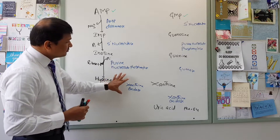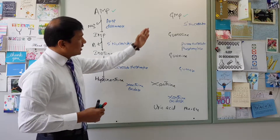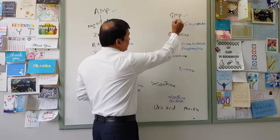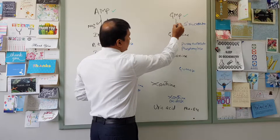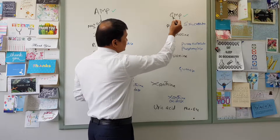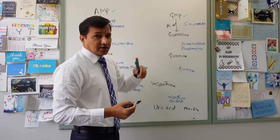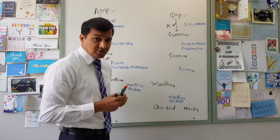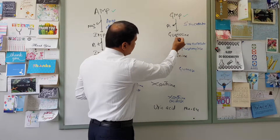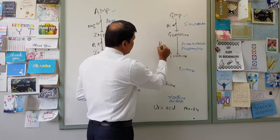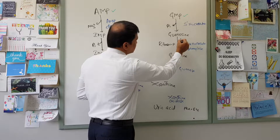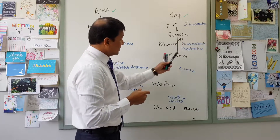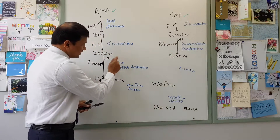Now for GMP: guanosine monophosphate is converted into the nucleoside guanosine by removal of phosphate, done by 5' nucleotidase. Then guanosine (nucleoside) is converted into guanine (free base) by releasing ribose-1-phosphate. Inorganic phosphate is incorporated into the reaction and ribose-1-phosphate is released — again done by purine nucleoside phosphorylase, the same mechanism as before.